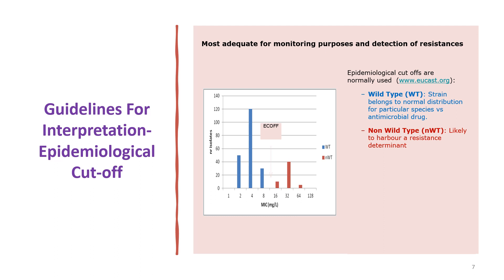Now, what is the guidance for interpretation of ECOFF values? For MIC values, all MICs that are less than the ECOFF value are interpreted as wild type, and those MICs that are greater than the ECOFF value are interpreted as non-wild type — that is, with an acquired resistance mechanism versus no resistance mechanism.